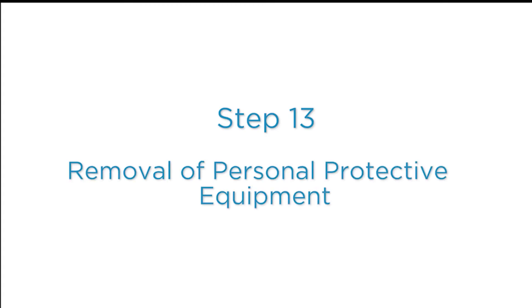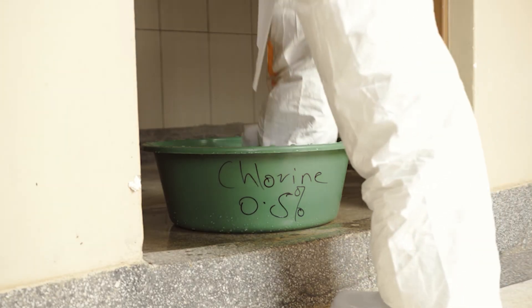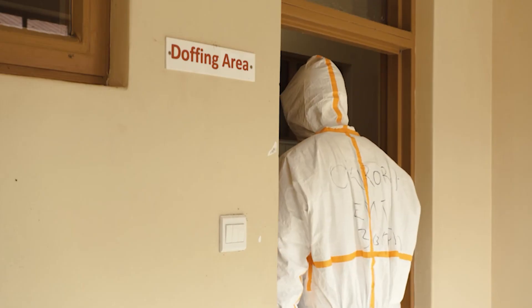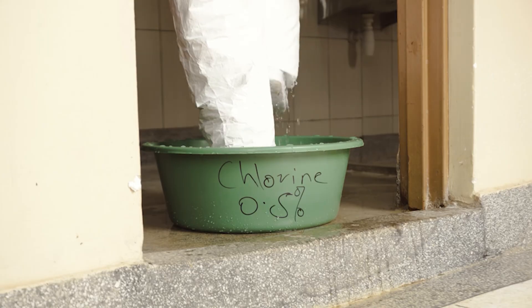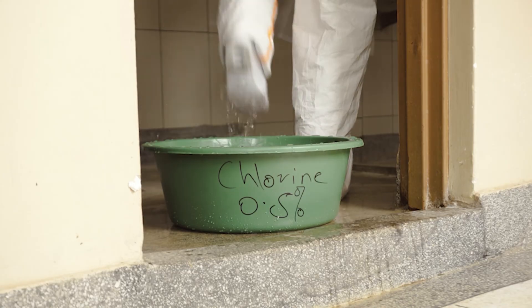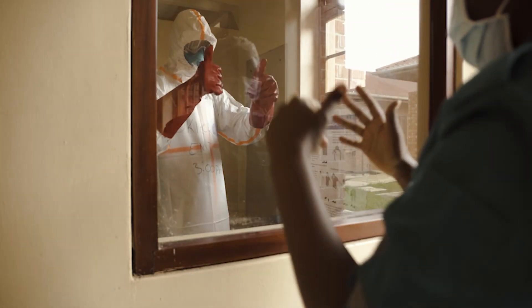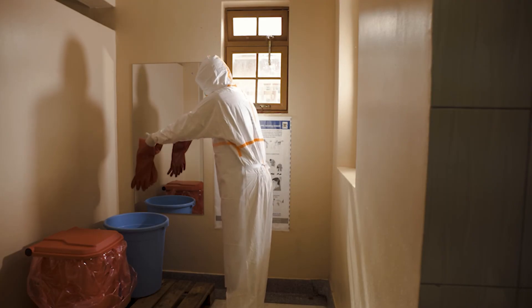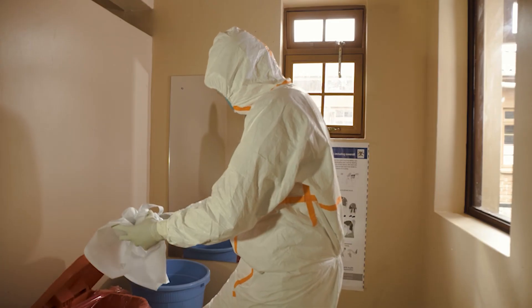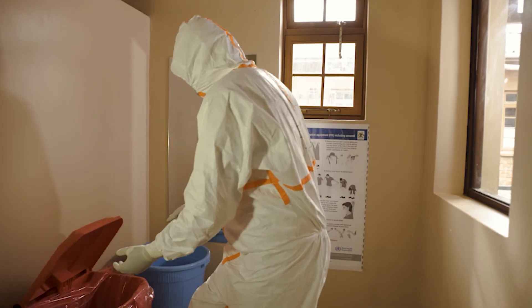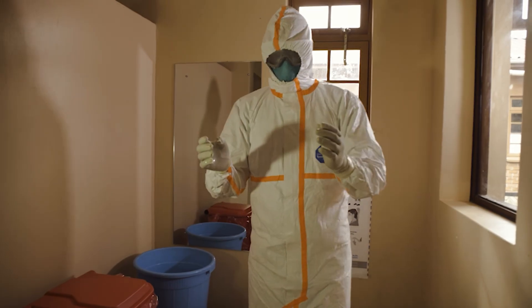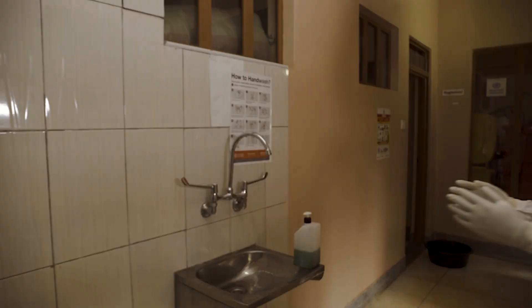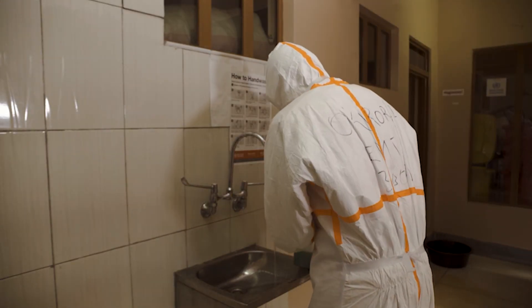Step thirteen: removal of personal protective equipment. Remove the personal protective equipment outside the ambulance according to the standard operating procedure, following the steps in the donning and doffing video resource. An observer should supervise doffing to ensure the safety of the procedure. Discard disposable personal protective equipment in the waste bin or bag. Remove boots and reusable aprons and place them in an appropriate plastic bag or bin to send to the personal protective equipment decontamination area. Perform hand hygiene.